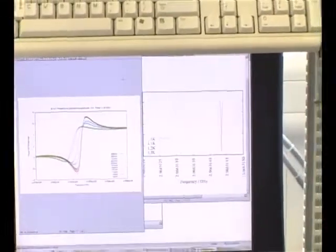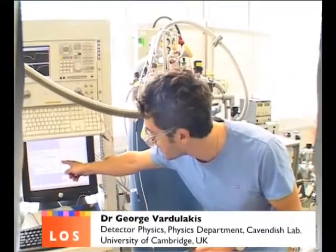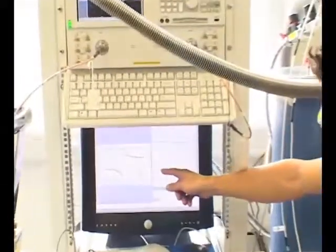We're looking at signals from a kinetic inductance detector here. What we can see on the left is a phase shift coming from a kinetic inductance detector as a function of temperature.